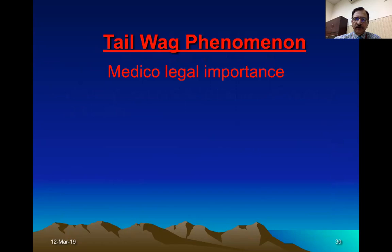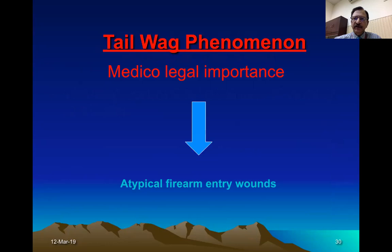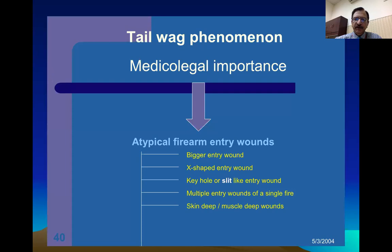The medico-legal importance of terminal tail wag is significant from a forensic point of view because it produces atypical entry wounds. Typical entry wounds are circular or oval with a characteristic abrasion collar, but with terminal tail wag they become atypical — the entry wound may be bigger, cross-shaped, or keyhole type. Sometimes the bullet is fragmented after traveling through glass or metal, producing multiple entry points.